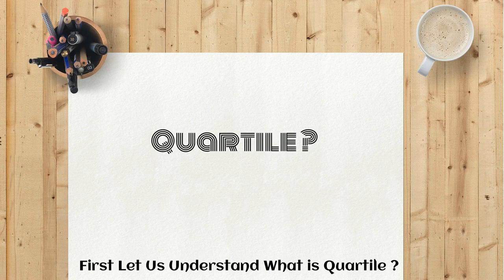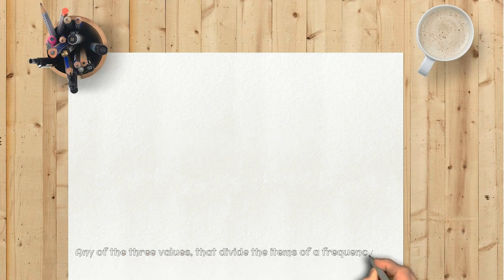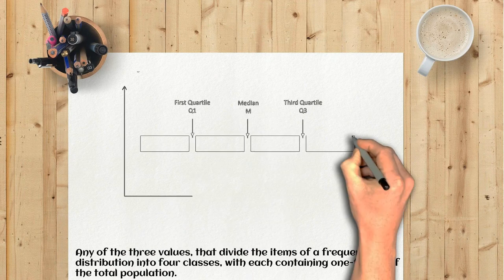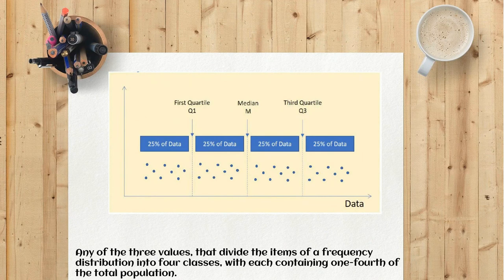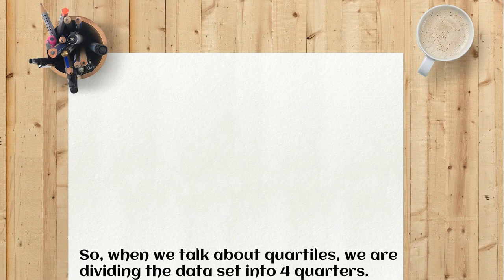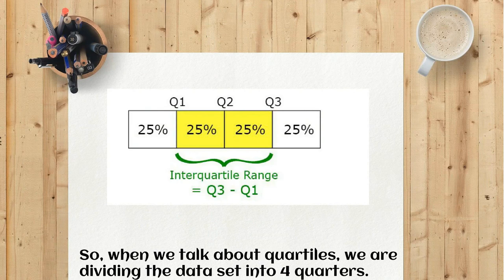What is quartile? Any of the three values that divide the items of a frequency distribution into four classes, with each containing one fourth of the total population. So when we talk about quartiles, we are dividing the data set into four quarters.